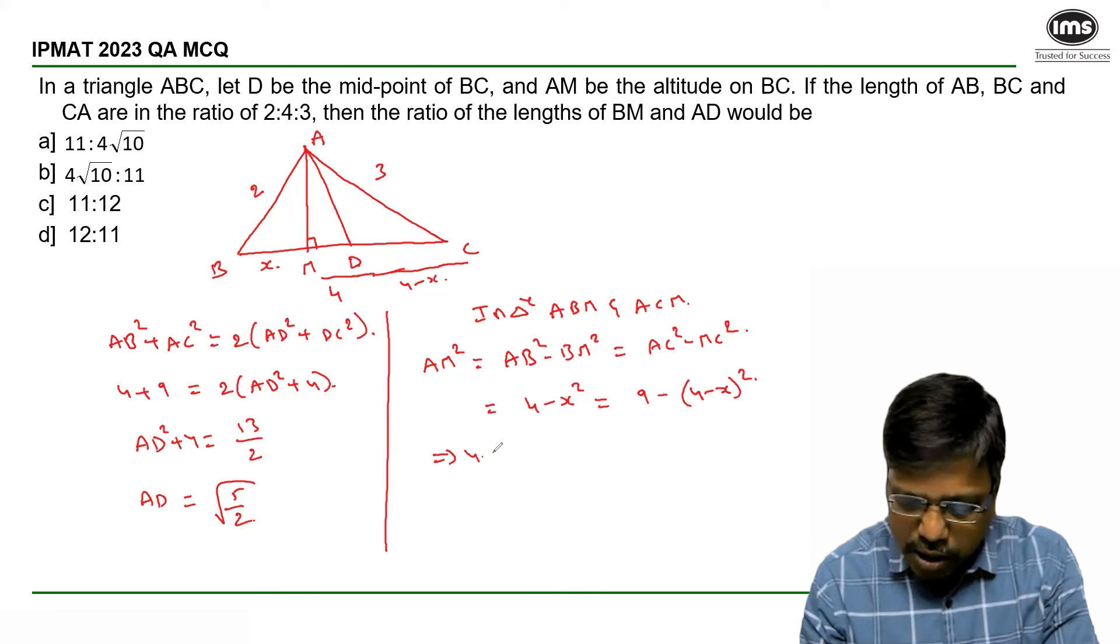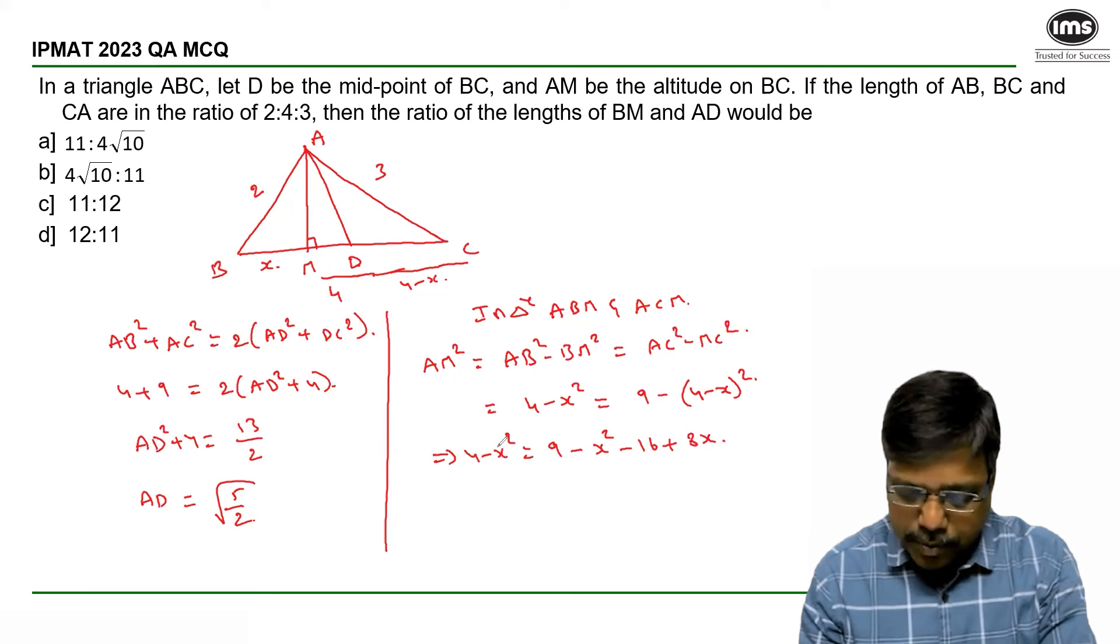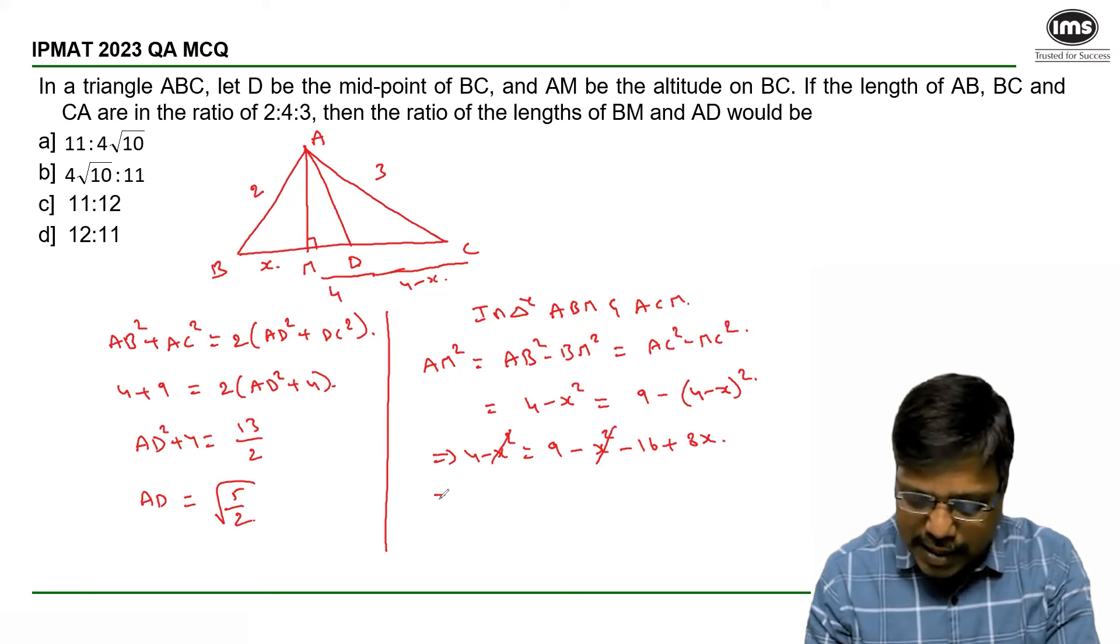4 - x² = 9 - (4 - x)². Expanding gives 4 - x² = 9 - 16 + 8x - x². The x² terms cancel.